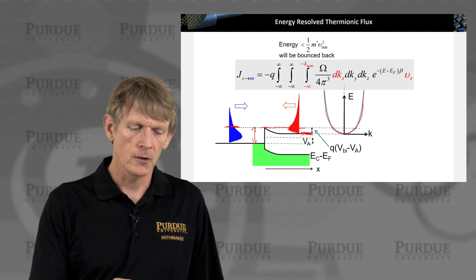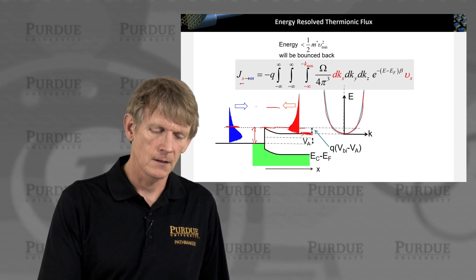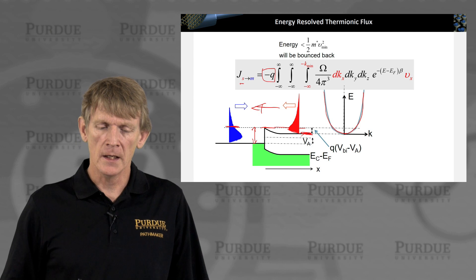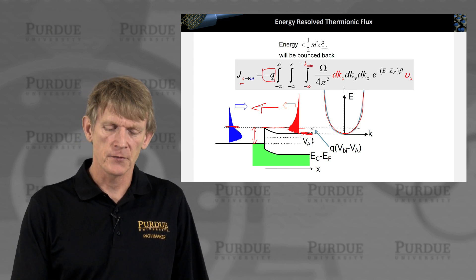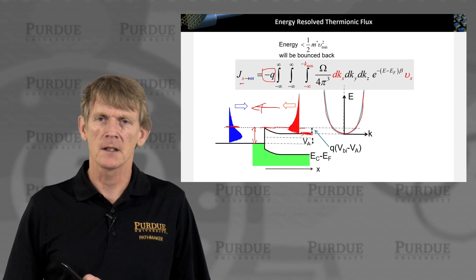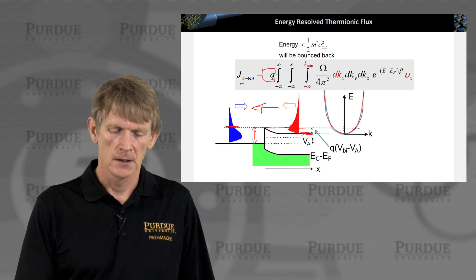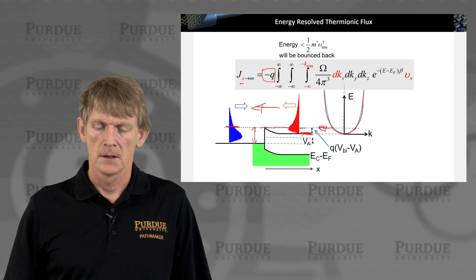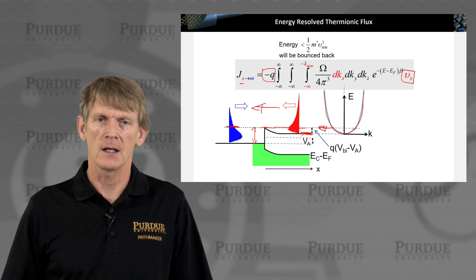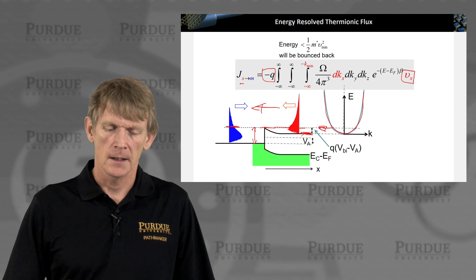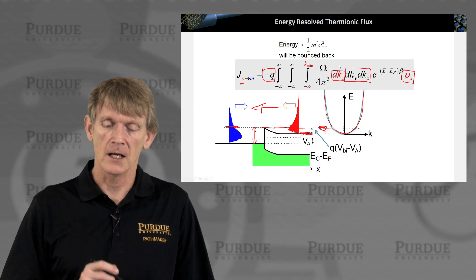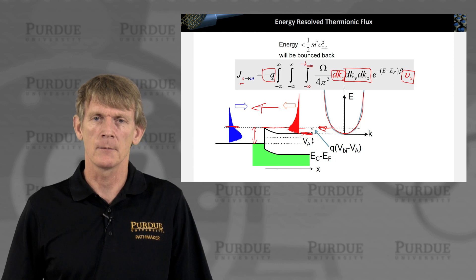We're going to look at the electron flow from the semiconductor to the metal, going in this direction. We are trying to integrate over this three-dimensional EK diagram to get all the states. We're interested in the momentum distribution that travels in the x direction, and we'll find that in the distribution of kx, keeping ky and kz for completeness because this is part of the three-dimensional density of states.